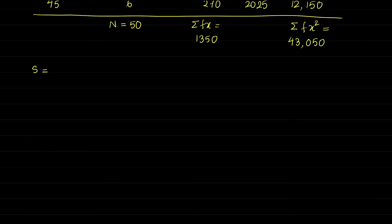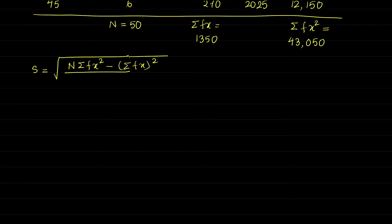Now we can use the formula for standard deviation. The standard deviation formula is: root over N into summation FX² minus summation FX whole square, divided by N into N minus one.